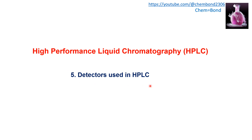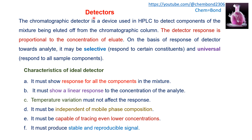One of the components of HPLC instrumentation is the detector. A chromatographic detector is a device used in HPLC to detect components of the mixture being eluted off from the chromatographic column. We inject the sample into the injector, it passes through the column, and at the end it reaches the detector. This is the most important component of HPLC instrumentation because it shows the final qualitative and quantitative results of the sample components.